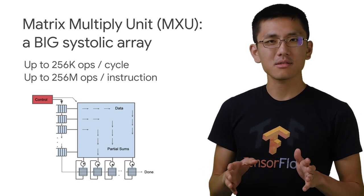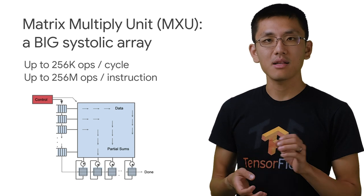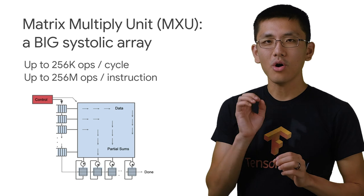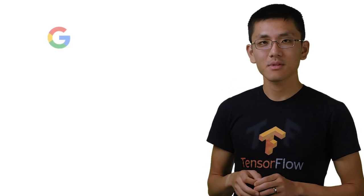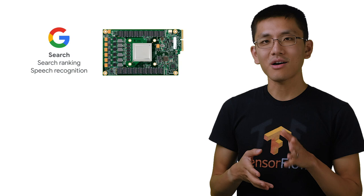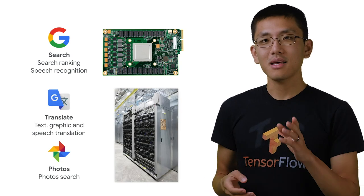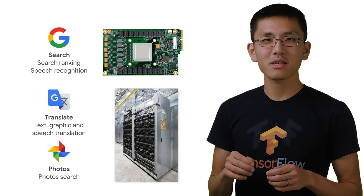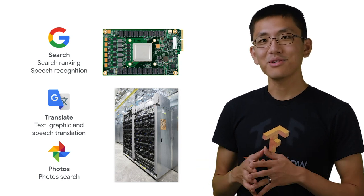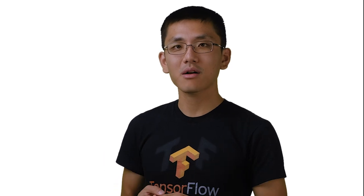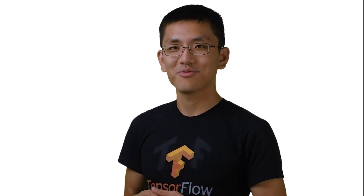One important note is that in order to achieve this design, the TPU version 1 only did predictions. You can't get your hands on the TPU v1 or even use it directly, but every time you use something like Google Photos or Google Translate, there's probably a TPU powering your search somewhere. On the next episode of AI Adventures, we'll talk about the TPU v2 and v3, how they work, and how to get your code to run on a TPU.